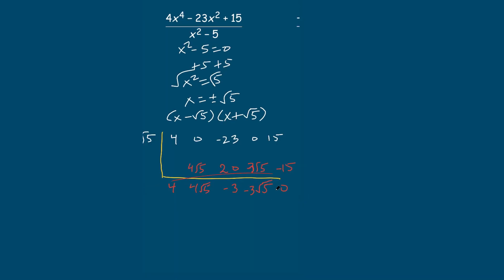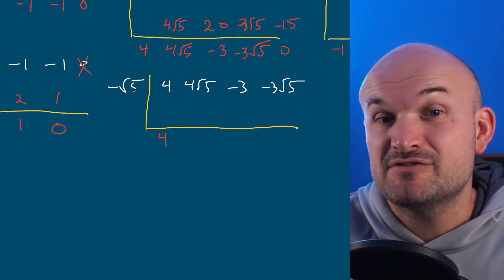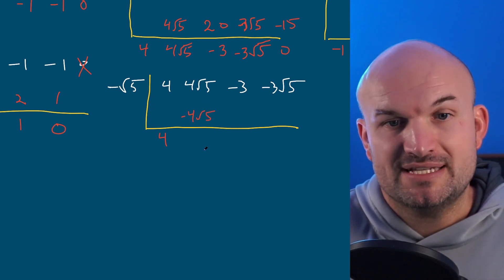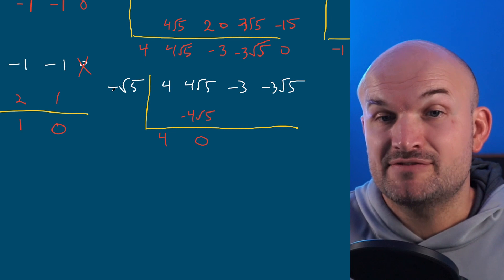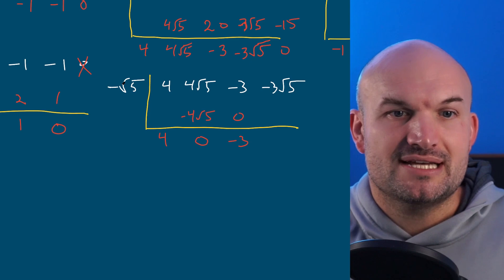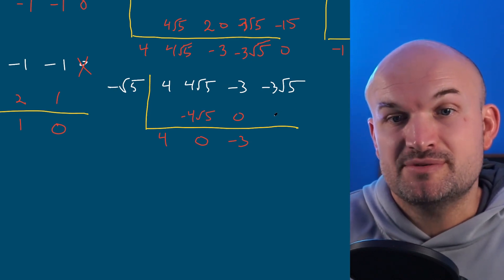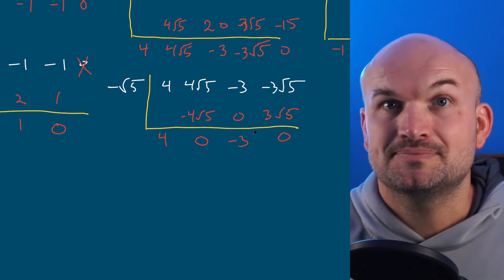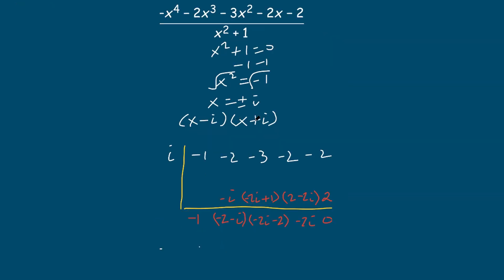In the next example, we're going to have negative square root of five on the outside, and we take our coefficients from the quotient: four, four square root of five, negative three, and negative three square root of five. Bring down the four. Four times negative square root of five is negative four square root of five — that goes to zero. Zero times negative square root of five is zero. Negative three plus zero is negative three. Negative three times negative square root of five is positive three square root of five, which again gives you zero.